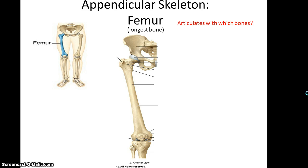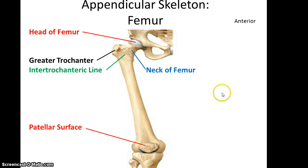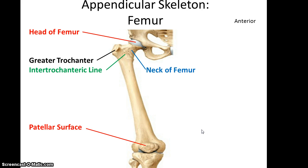The femur is the longest bone in the body and it goes the length of the thigh. On the most proximal edge it has the head of the femur, which fits into the acetabulum. Below that is the neck of the femur. Then you have a large greater trochanter and then the intertrochanteric line. There's also a lesser trochanter. Way at the distal end of the bone is the patellar surface — a smooth area that will be articulating with the patella.